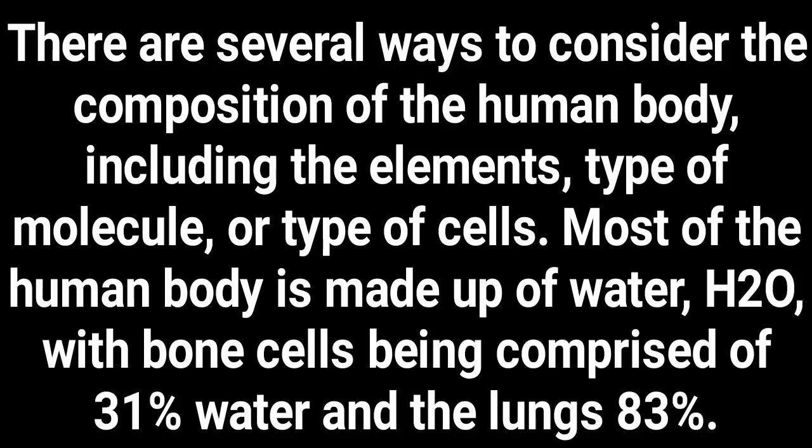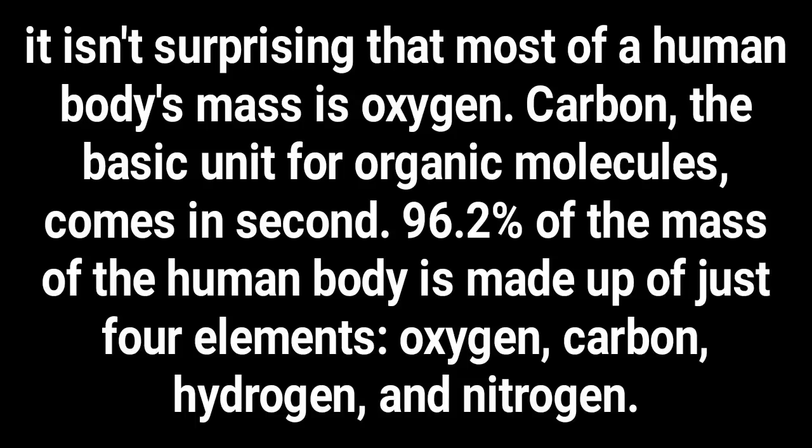There are several ways to consider the composition of the human body, including the elements, type of molecule, or type of cells. Most of the human body is made up of water, with bone cells comprised of 31 percent water and the lungs 83 percent. It is not surprising that most of our body's mass is oxygen and carbon. 96.2 percent of the mass of the human body is made up of just four elements: oxygen, carbon, hydrogen, and nitrogen.